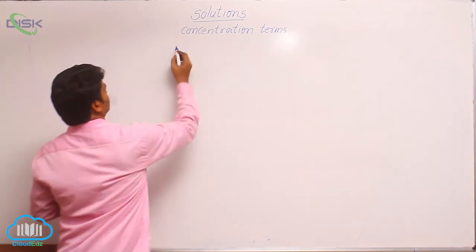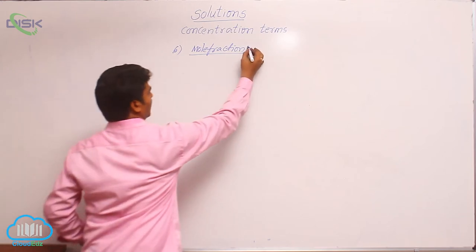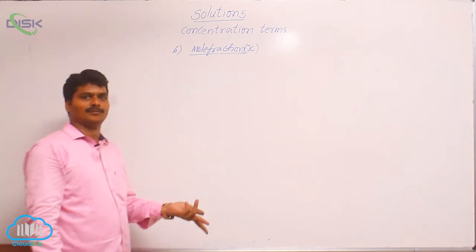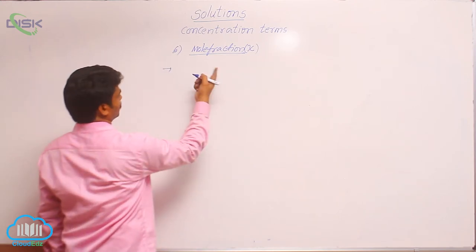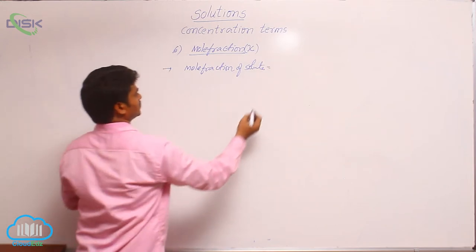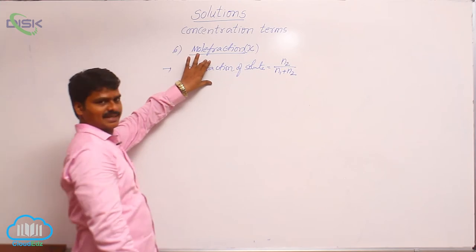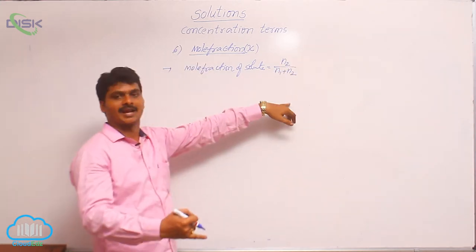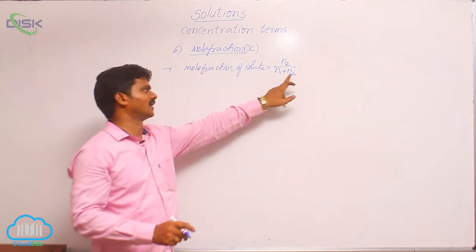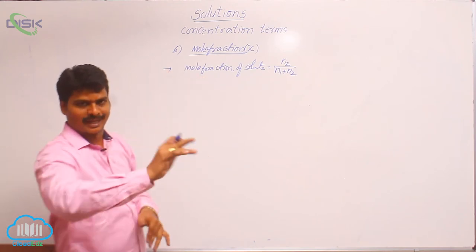The last term is mole fraction, denoted by chi (χ) or x in some books. What is mole fraction? It is a fraction of moles. Mole fraction of solute equals number of moles of solute divided by (number of moles of solute plus number of moles of solvent). It is the number of moles of one component to the total number of moles in the solution. We are discussing binary solutions here, so only two terms n1 and n2 appear.